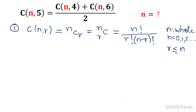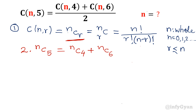So let's multiply the given equation by 2. Why? Because I want to eliminate this denominator. So let me multiply both sides by 2 and write in the standard method of NCR representation. The equation will be 2 times NC5 equal to NC4 plus NC6. If NC4, NC5, NC6 are in AP, then we write twice of NC5 equal to NC4 plus NC6.